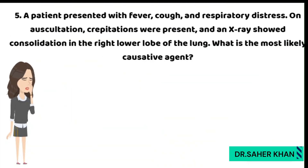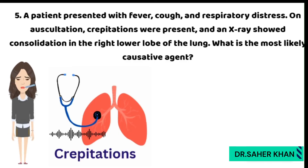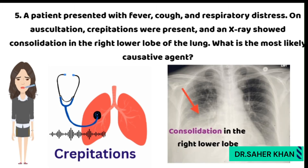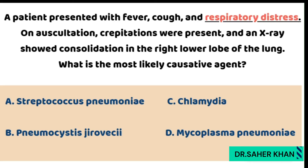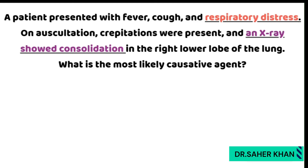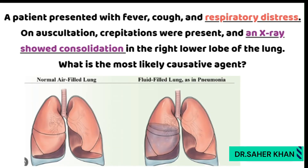Our last question: a patient presents with fever, cough, and respiratory distress. On auscultation, crepitations were present and an X-ray showed consolidation in the right lower lobe of the lung. What is the most likely causative agent? The key clue here is consolidation. Consolidation refers to the lungs being filled with fluid or pus, which indicates that the patient has pneumonia. The answer revolves around pneumonia, which is classified into two main types: typical pneumonia and atypical pneumonia.